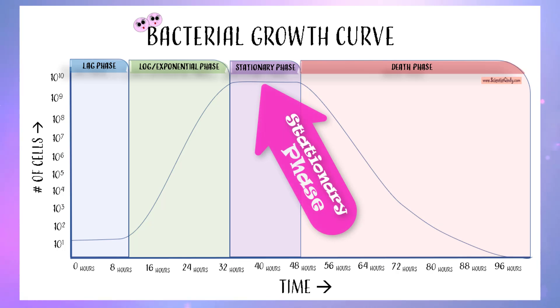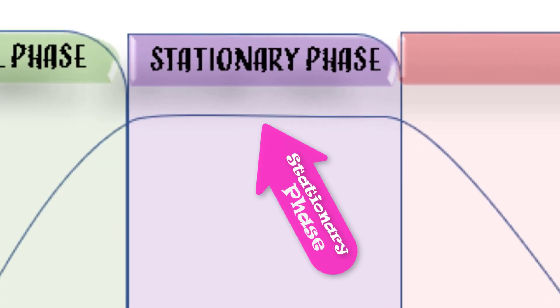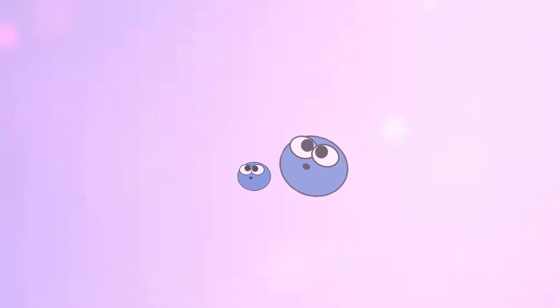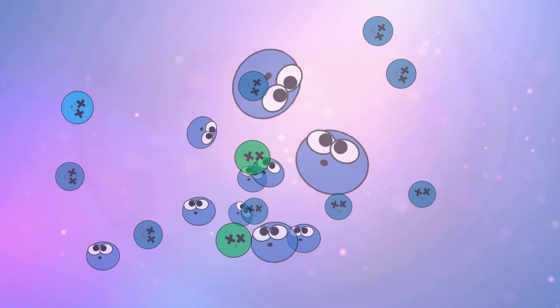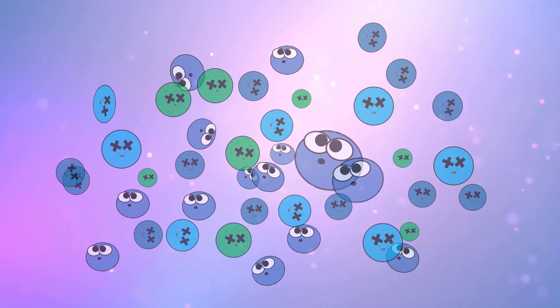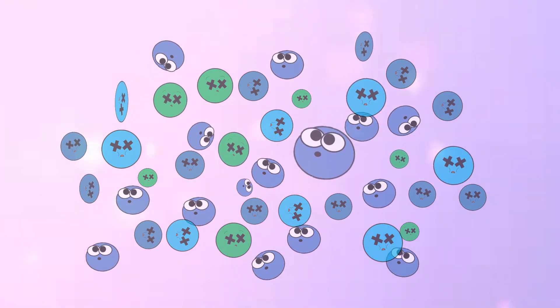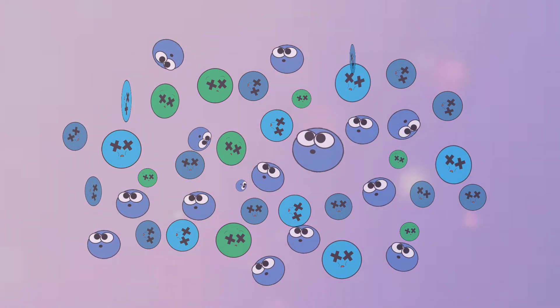In the stationary phase, we see that there is no real change in the number of bacteria in the cell culture. The number of bacteria cells in our cell culture remain fairly constant due to the fact that the number of cells being created will roughly be equal to the number of cells dying in our cell culture.